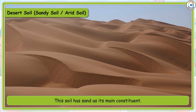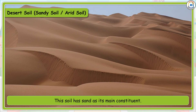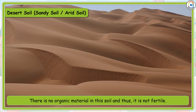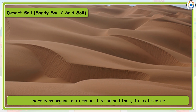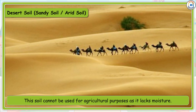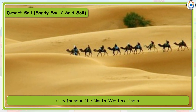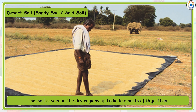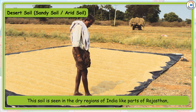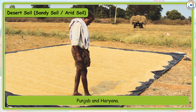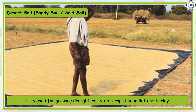Desert soil, also called sandy or arid soil, has sand as its main constituent. There is no organic material in this soil and thus it is not fertile. This soil cannot be used for agricultural purposes as it lacks moisture. It is found in north-western India, particularly in the dry regions of Rajasthan, Punjab, and Haryana. It is good for growing drought-resistant crops like millet and barley.